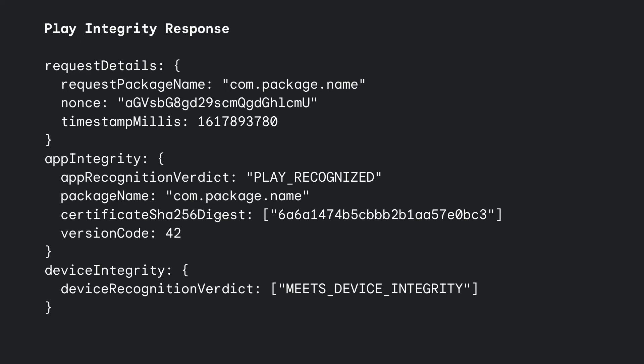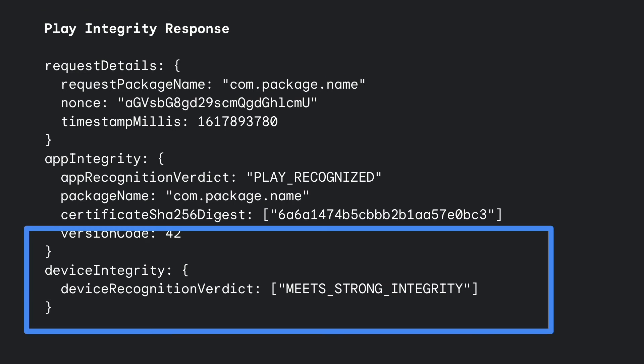Play Integrity API also has a device integrity verdict related to attestation. The device integrity result is meets attestation or meets device integrity, meaning the app is running on an Android device powered by Google Play services. The device passes system integrity checks and meets Android compatibility requirements. If you opt in, you can also see meets strong integrity, which is powered by key attestation directly.